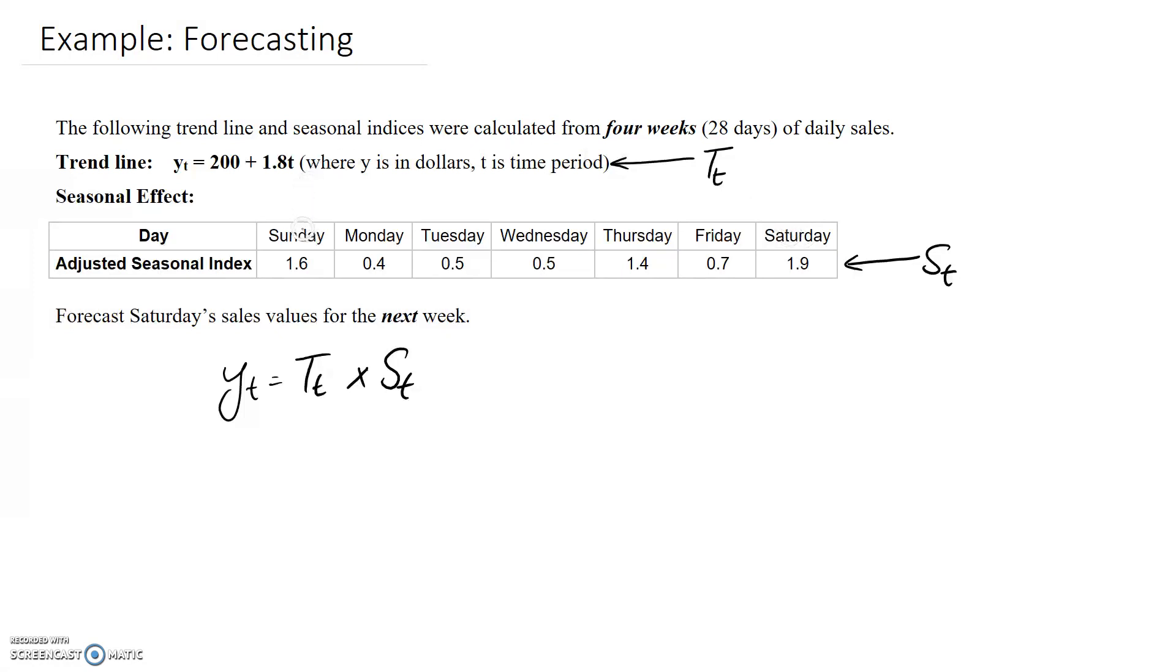then going back to the beginning of the week, Sunday would be 29, Monday 30, then 31, 32, 33, 34, and 35 when we get back to Saturday. So the time period for forecasting is t = 35, which is the little t in our equation.